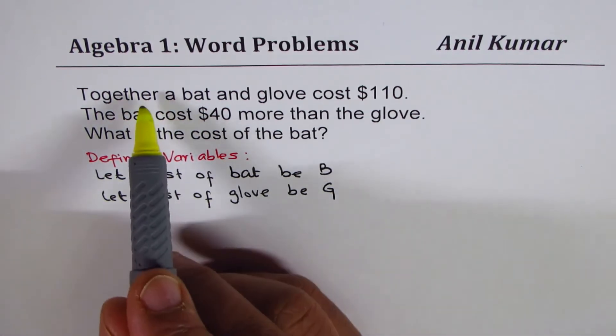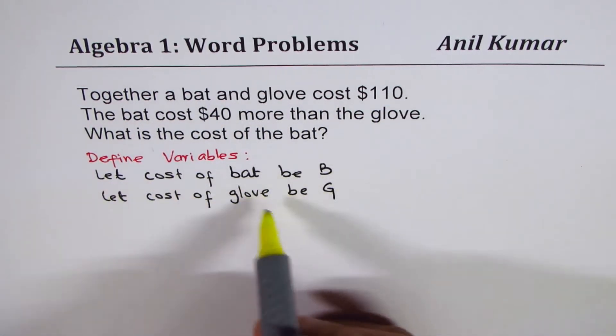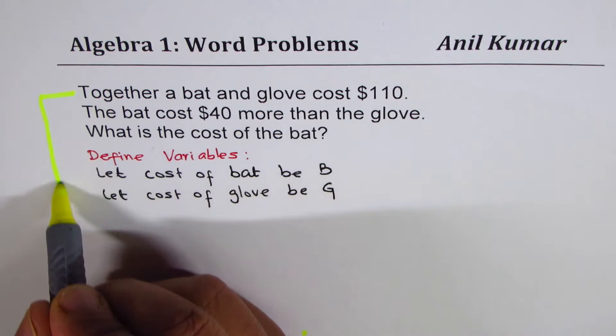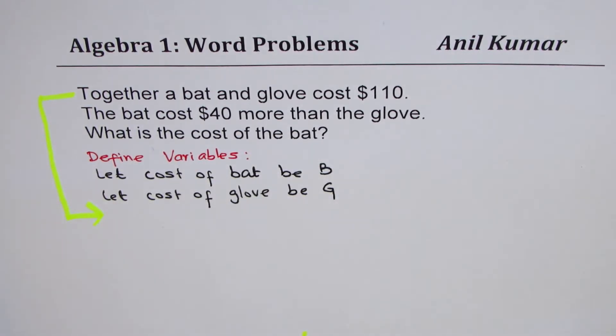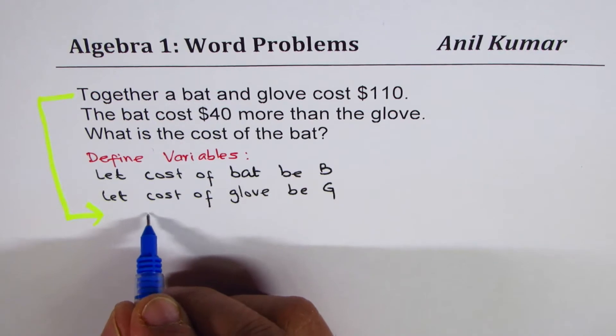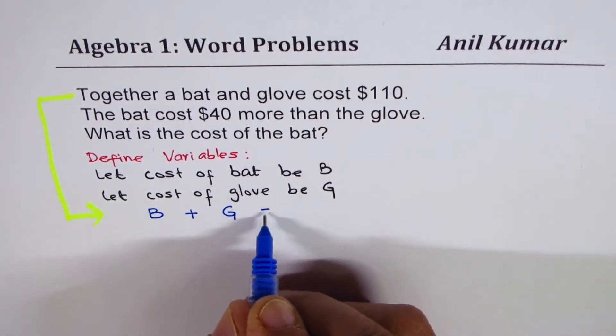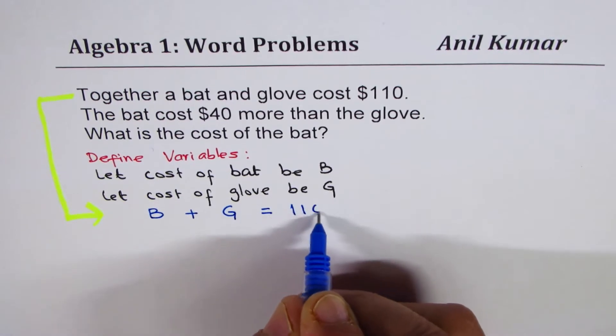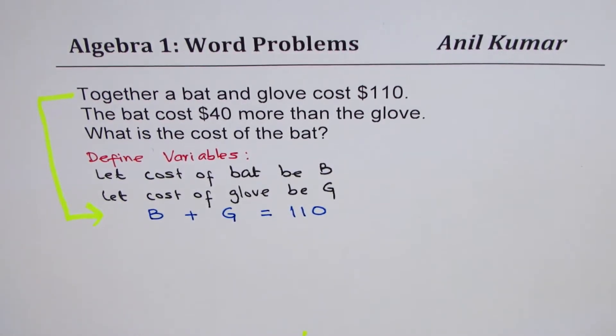It says, together a bat and glove cost $110. So, once we define this variable, then this statement can be written as an equation. So, when we say together a bat and glove, that means when you add them up, the cost of bat plus the cost of gloves is equal to $110. Everything is in dollars, so we are not writing dollars.